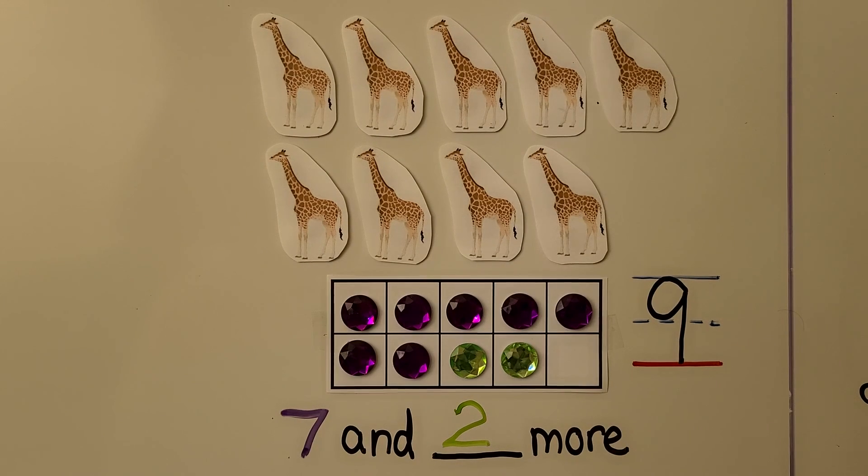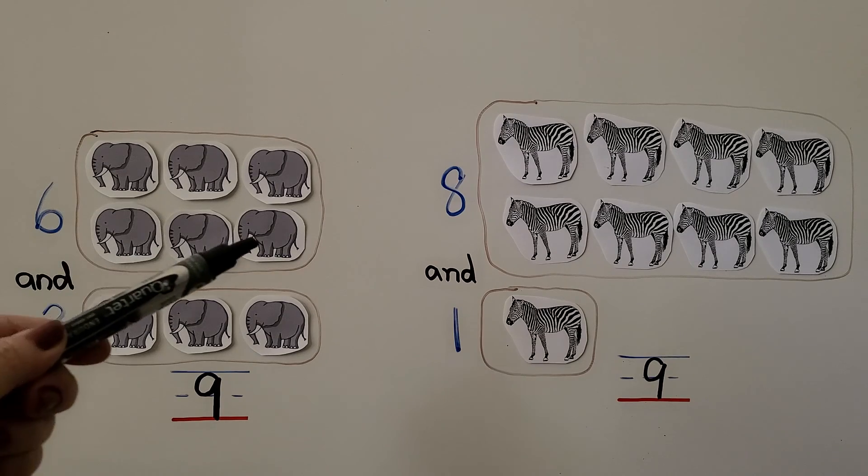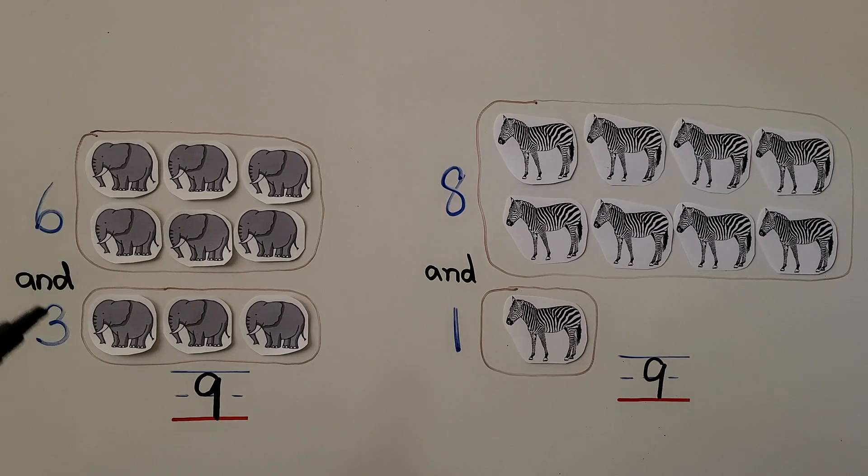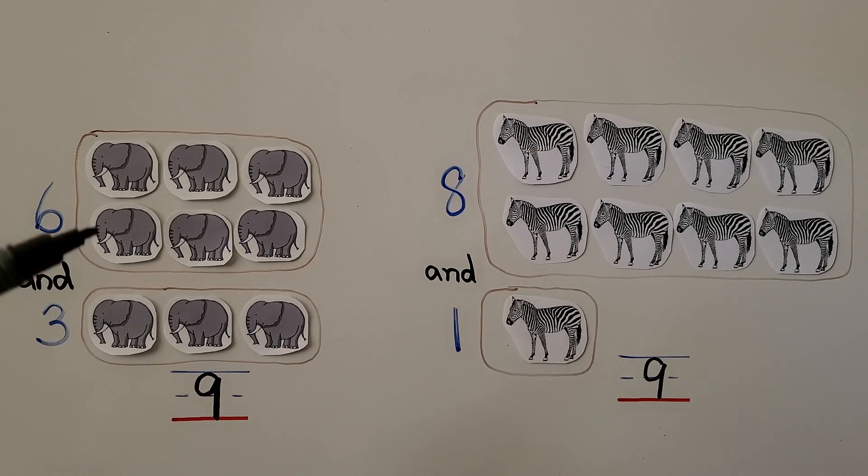And if you remember, when a 10 frame has 1 missing, then it's showing 9, and we have 1 missing. Here we have some elephants: 1, 2, 3, 4, 5, 6 elephants, and here we have 1, 2, 3 elephants. We have 6, 7, 8, 9. There's 9 elephants. We can show 9 as 6 and 3 more.